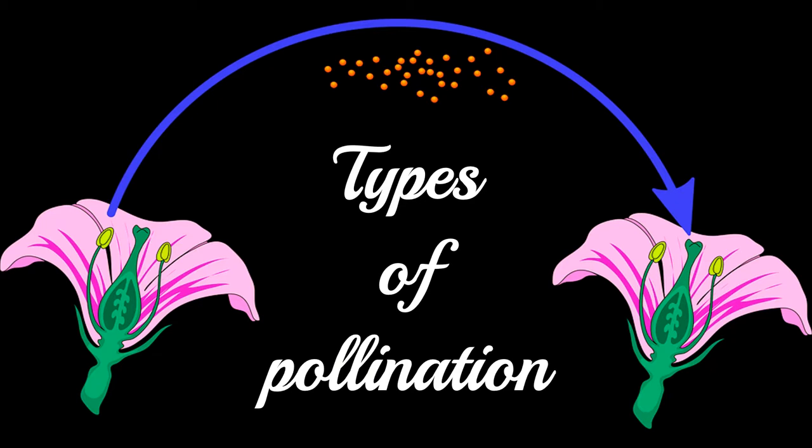Pollen is transferred from the androsium (anther) to the gynosium (stigma) of a flower. This process is normally called pollination, and it occurs within the same flower.